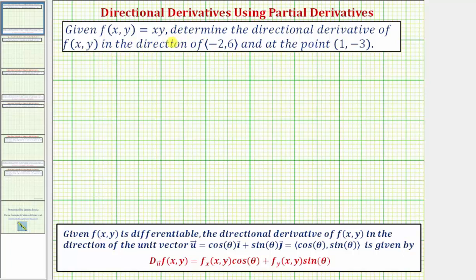We're given f(x, y) = xy and asked to determine the directional derivative of the function in the direction of the vector with components negative two, six, and at the point one, negative three.